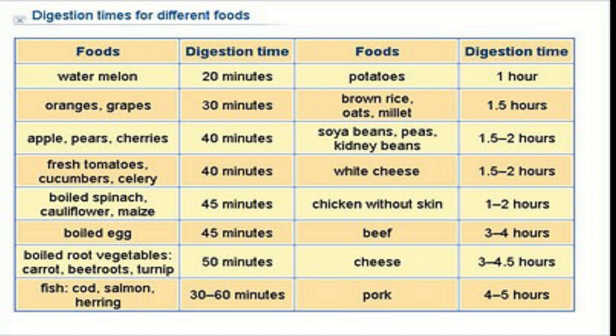Soybeans are actually very chewy. Fresh tomatoes, cucumber, and celery need just 40 minutes. White cheese needs 1.5 to 2 hours. Boiled spinach, cauliflower, and mixed seeds need 35 minutes to digest. Chicken with skin needs 1 to 2 hours. Boiled eggs need 45 minutes, while beef takes 3 to 4 hours — that's a lot! Boiled root vegetables like carrots and beetroot need 50 minutes, and cheese needs 3 to 4.5 hours.